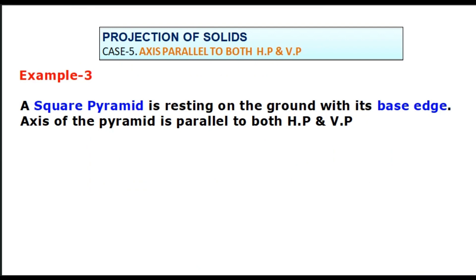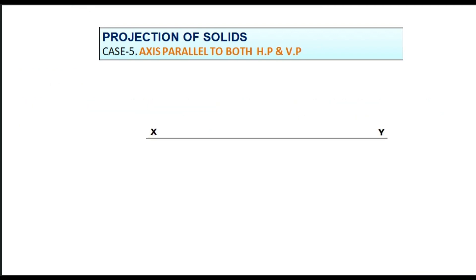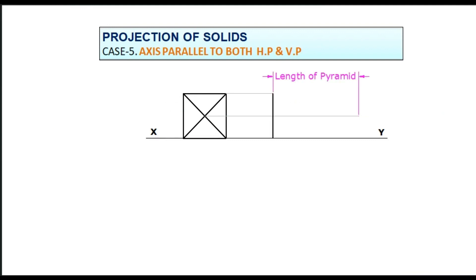In another example, a square pyramid is resting on the ground with its base. The axis of the pyramid is parallel to both HP and VP. Since the axis is parallel to both planes, the first view to be drawn is the side view. Draw an XY line, mark the size of the side on the XY line, and draw perpendicular lines on both ends. Join the end points of the perpendicular sides to complete the square. Draw the diagonals — the intersection point of the diagonals is the apex point of the pyramid. To draw the elevation, draw projectors horizontally, draw the base, measure the length of the axis, and join the base corners to the apex point.